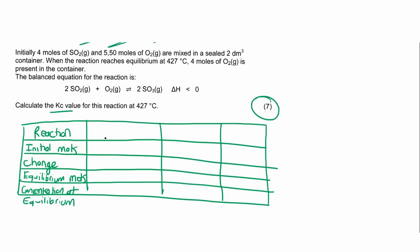So we know that the reaction is literally, you just write out the reaction. 2SO2(g) + O2(g) ⇌ 2SO3(g).